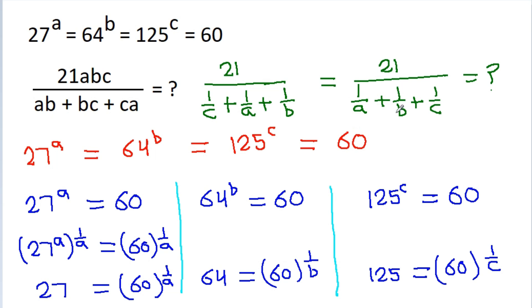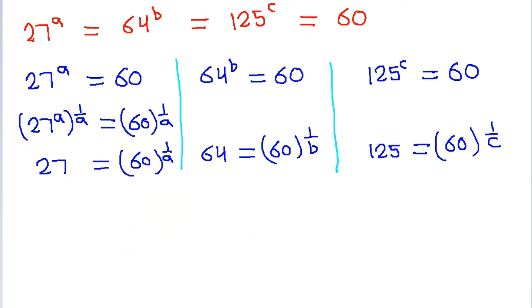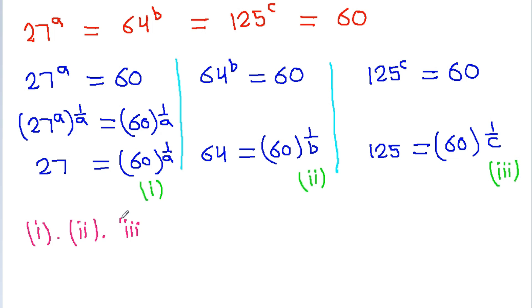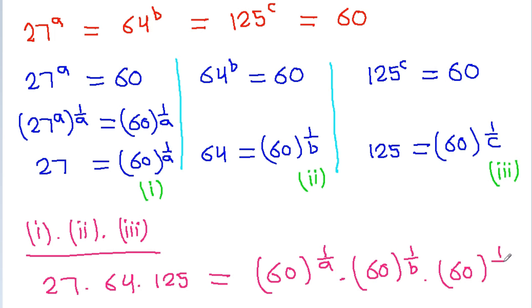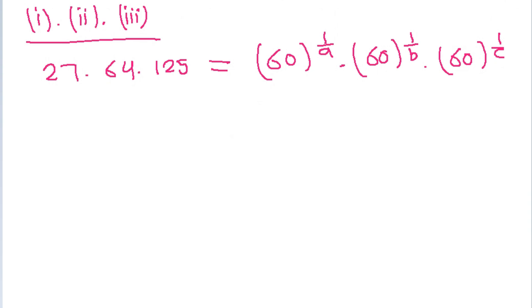Now for finding 1/a plus 1/b plus 1/c, we multiply these three equations together. Calling them equation 1, equation 2, and equation 3, multiplying all three gives: 27 times 64 times 125 is equal to 60 to the power 1/a, times 60 to the power 1/b, times 60 to the power 1/c. Now 27 is 3 cubed, 64 is 4 cubed, and 125 is 5 cubed.